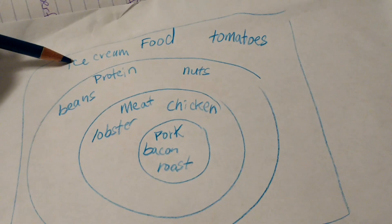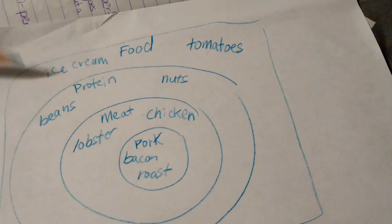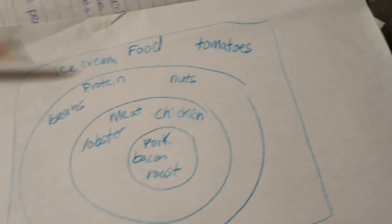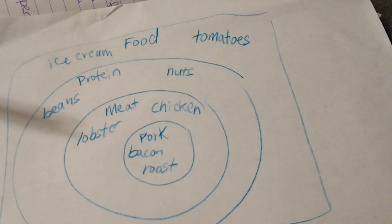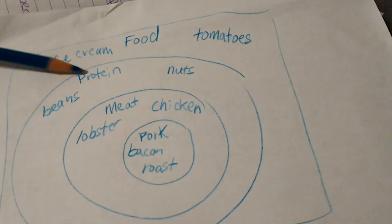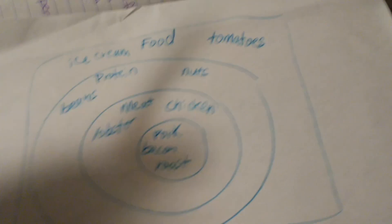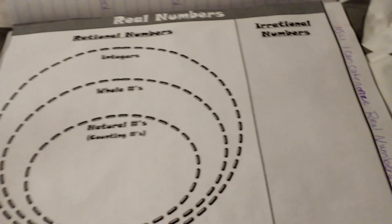So the things on the inside go with everything. The things to the outside only go with those things on the outside. So ice cream is not any of these, but beans are a protein and food. Okay, so that's how the thing works. So we've got this real numbers chart.